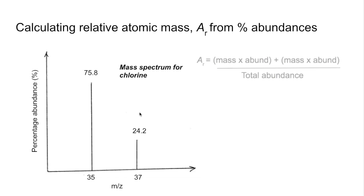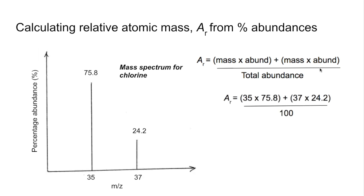So the equation, or formula we use, is mass of the isotope times abundance, plus mass times abundance. Obviously, if there's a third line on your spectrum, you just keep extending this formula here. And we're going to divide by the total abundance. So the numbers plug in like that, and the total abundance, obviously, because it's a percentage, is 100. And that's coming out at about 35.5.